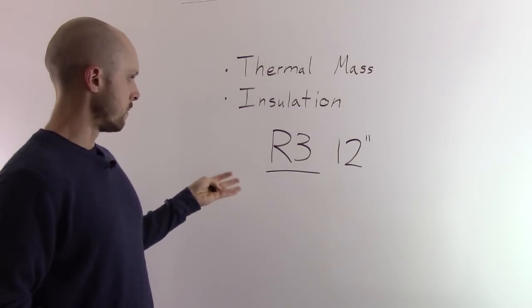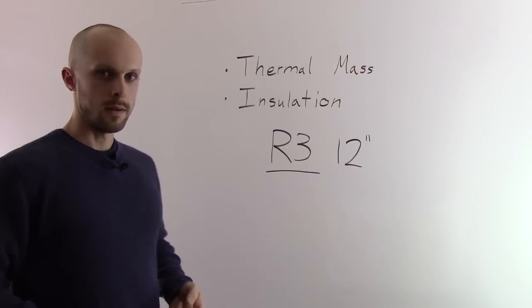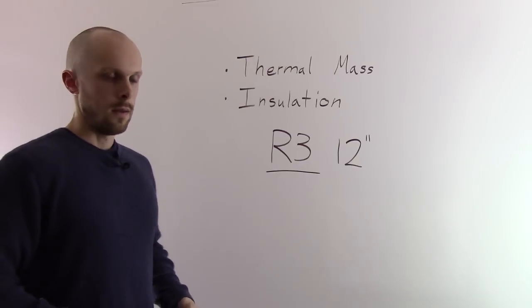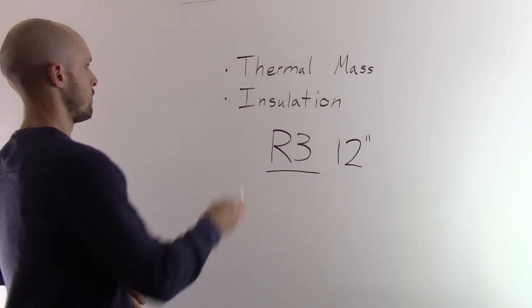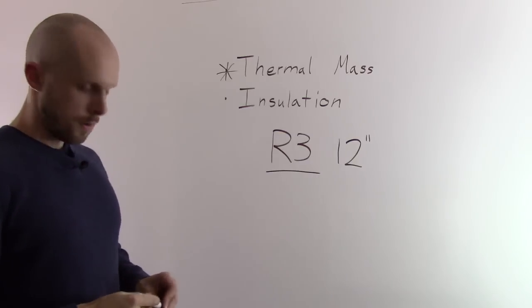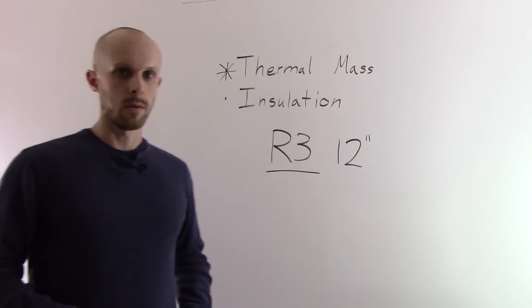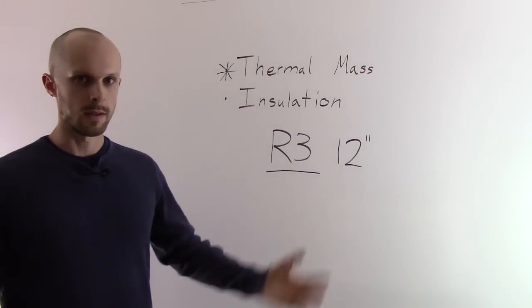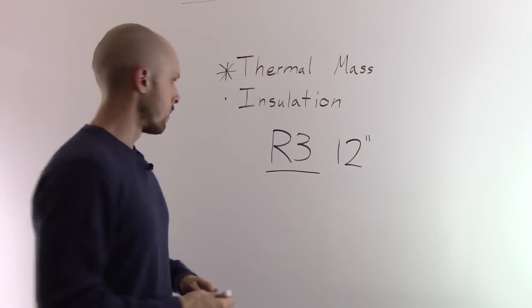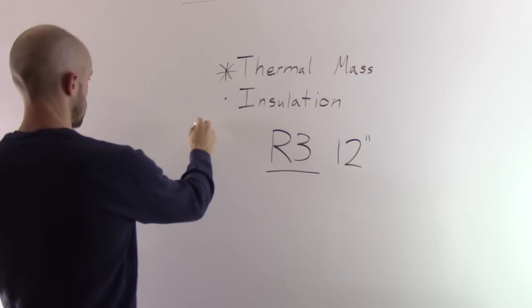So knowing that, how does a cob house regulate the temperature inside? The regulation of temperature is pretty much all in the thermal mass. The thermal mass is like a heat battery storage. So it absorbs that sunlight and the heat of the day into the wall and it actually stores it in there.